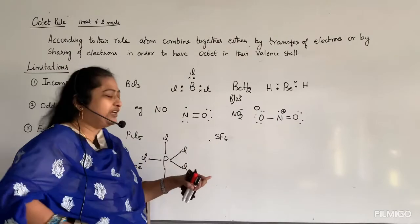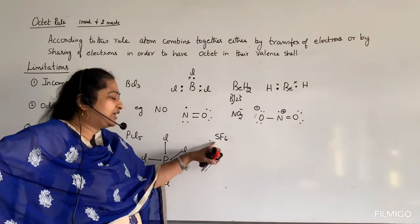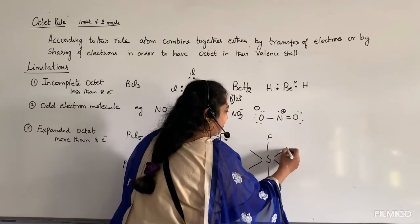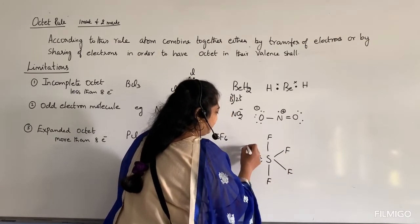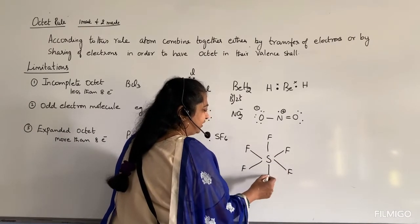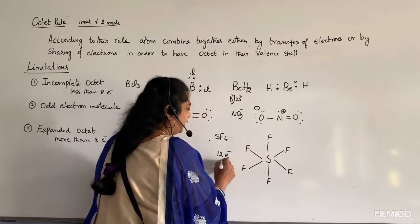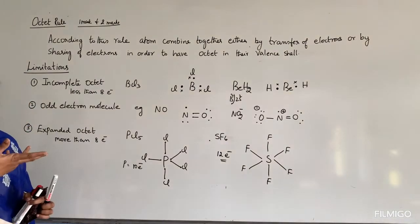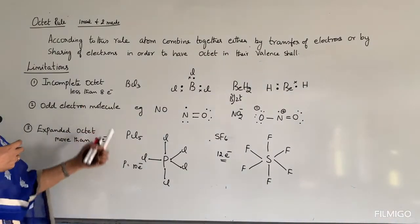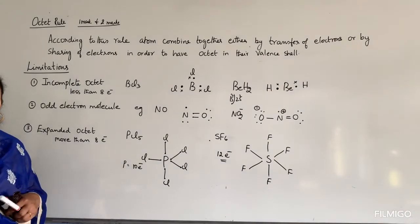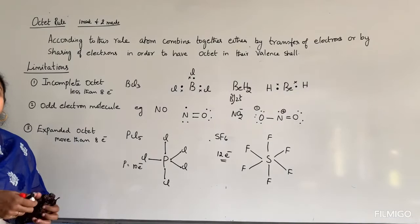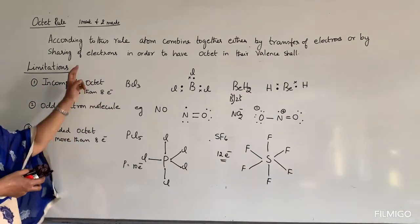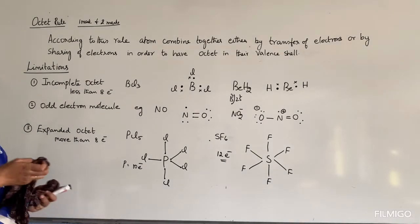Another example of expanded octet is SF6 — sulfur hexafluoride. Sulfur combines with 6 fluorine atoms. Sulfur has 12 electrons in its outermost shell — more than 8. Hence it has more than octet, so we say it is an expanded octet. All these are exceptions to the octet rule. Some compounds do not have 8 electrons but are still highly stable. You must know what is the octet rule and the limitations of the octet rule, as they are very important exam questions.